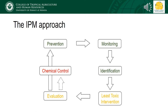A typical IPM approach would look something like this. Let's pretend you're growing vegetables in your backyard. The first step is pest prevention — you won't have issues with pests if you employ strategies from the onset that reduce the likelihood of pest populations building up. Along with prevention is monitoring. You should never treat for a pest unless you have confirmed that it is present, as doing so contributes to ongoing issues with prophylactic pesticide treatments. If in your monitoring you notice something, such as a new insect or pathogen in your garden, identify it, and continue to monitor it to see if it reaches economically damaging levels.